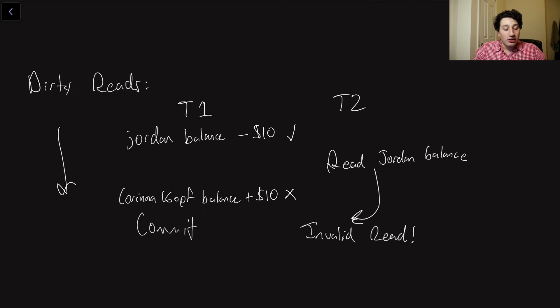The issue now is that I have gone ahead and read an uncommitted write, because Jordan Balance minus $10 was not actually yet committed. The commit happens down here because the commit only happens once both of these writes go through. And since the Karina Koff one failed, I've now read uncommitted write.